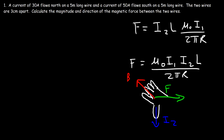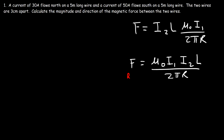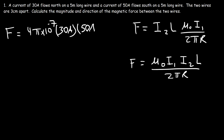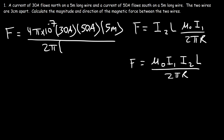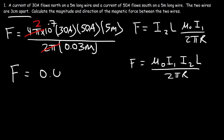Now let's finish the problem. F = mu zero I1 I2 L divided by 2 pi r. Mu zero is 4 pi × 10⁻⁷, I1 = 30 A, I2 = 50 A, L = 5 m, and r = 3 cm = 0.03 m. Since 4 pi divided by 2 pi = 2, this simplifies to 2 × 10⁻⁷ times 30 times 50 times 5 divided by 0.03. The magnetic force acting on each wire is 0.05 newtons.